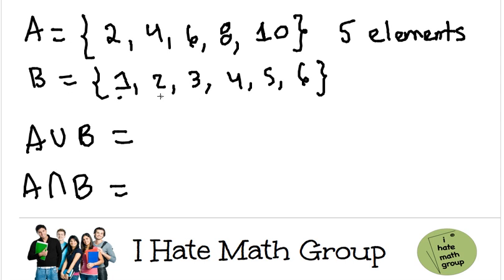And B has 1, 2, 3, 4, 5, 6, 6 elements. Okay, so let's go ahead and figure out how to find the union and how to find the intersection.